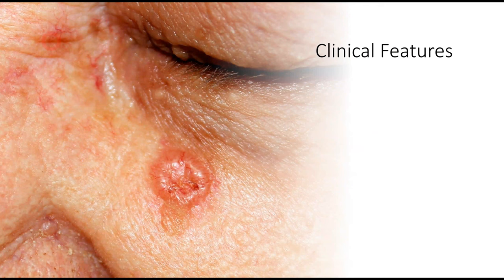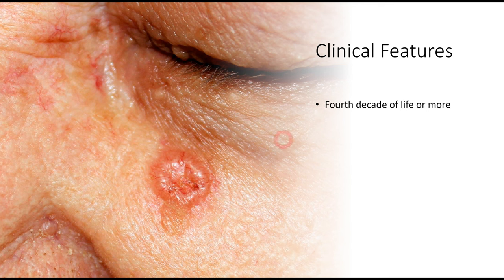Talking about the clinical features of basal cell carcinoma: it is divided into different subtypes, so the clinical features vary among them. In this clinical picture, you can appreciate the middle third of the face with a rolled margin and central ulceration — this is the most common appearance. Basal cell carcinoma basically arises around the fourth decade of life.